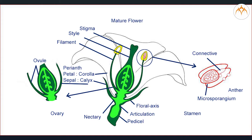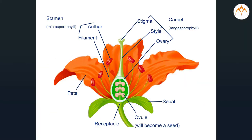When all these four parts are present, the flower is said to be complete and bisexual. Calyx is made up of sepals and corolla has petals. Androecium has stamens, and a single member of gynoecium is called a carpel or a pistil. Each stamen has anthers. Pollen grains are produced inside anthers by meiosis. Each carpel has an ovary at the base which has one or many ovules.